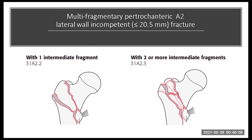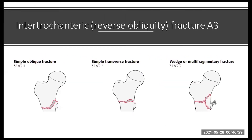The A2 fractures are multifragmentary and have lateral wall incompetence or deficiency. There are two groups: one with one intermediate fragment and the other with two or more intermediate fragments. The A3, known as reverse obliquity, is an intertrochanteric fracture meaning it happens between the trochanters. It could be oblique, transverse, wedge, or multifragmentary.